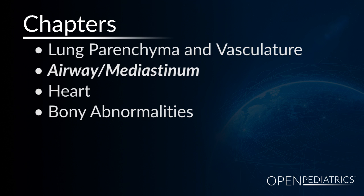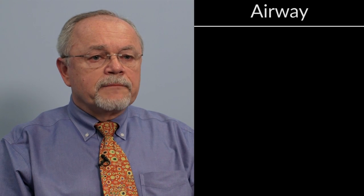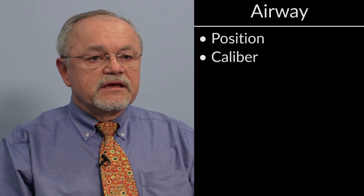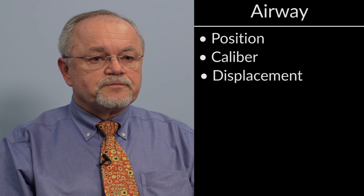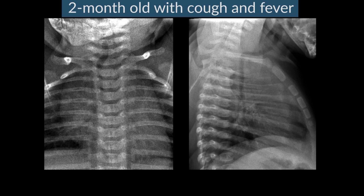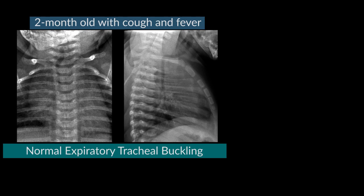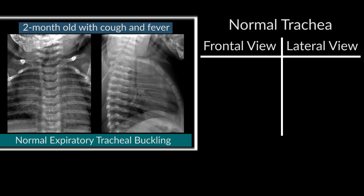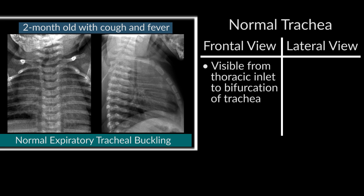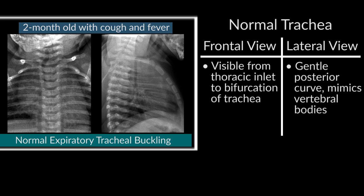Airway and mediastinum. Let's consider the airway — its position, caliber, and the possibility of displacement by abnormal structures. It's very important to know that the airway in a young infant is very mobile. During expiration, the trachea can buckle almost to 90 degrees, as seen on the frontal and lateral views in a normal expiratory radiograph. One should see the tracheal air column on the frontal view from the thoracic inlet all the way to the bifurcation, and on the lateral the trachea should follow a nice gentle posterior curve mimicking the vertebral bodies.